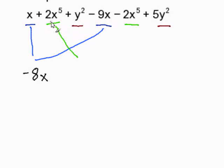Then we got 2x to the fifth power, subtract 2x to the fifth power. That is going to get you zero x to the fifth power which is the same thing as zero.